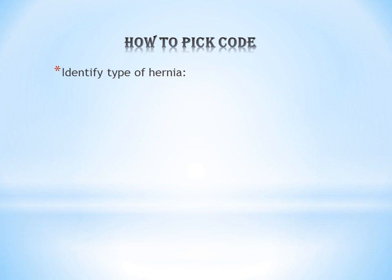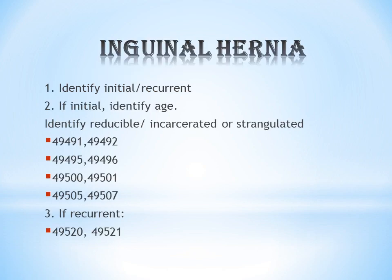Now let's see how to pick a code for hernia repair. When you get a hernia question, the first thing to do is identify the type of hernia — inguinal, femoral, lumbar, anterior abdominal, etc. For each type, there is a different set of codes.